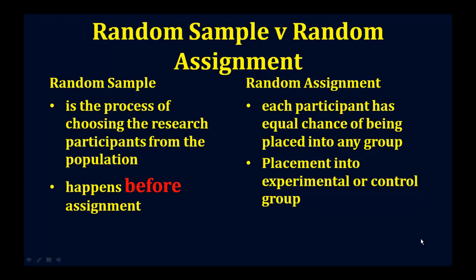Random sample is the process of choosing the research participants. Whether you're selecting for a survey or selecting for an experiment, you choose randomly. This hopefully will give you some level of representativeness in the process. It certainly increases the likelihood, and this happens before the experiment or before the survey is actually done.